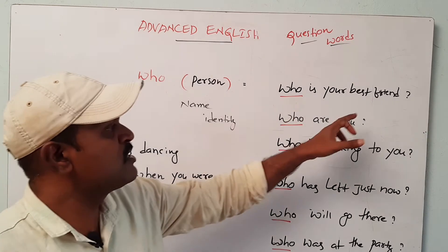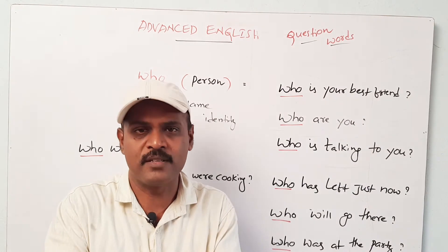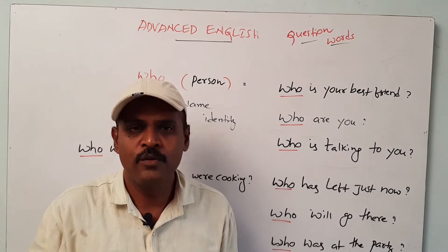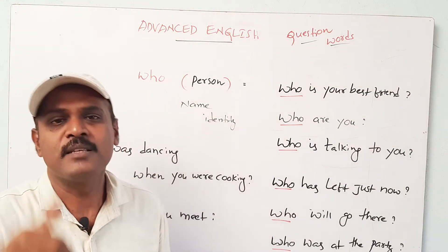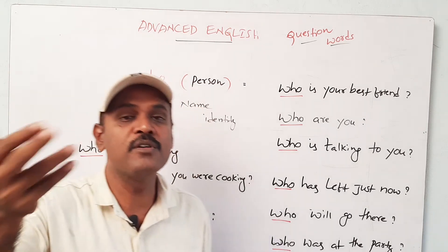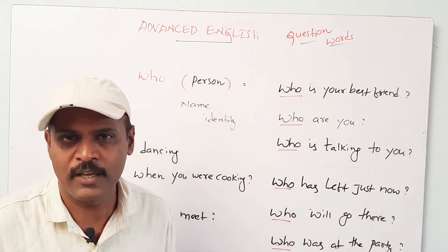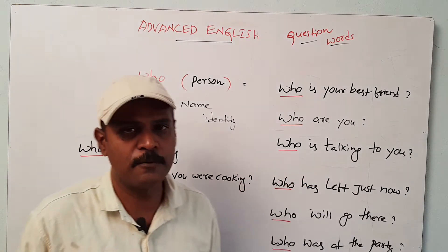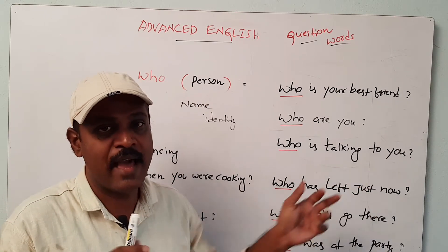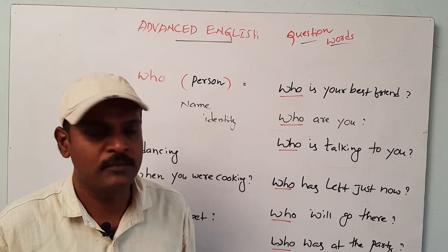The first sentence is: 'Who is your best friend?' That means I'm asking you — you have so many friends, who is your best friend? Next: 'Who are you?' You ask someone else — in case of one person, 'who are you?' In case of more than one person, you can also ask them 'who are you?' Next: 'Who is talking to you?' — this is present continuous tense, the action going on right now.